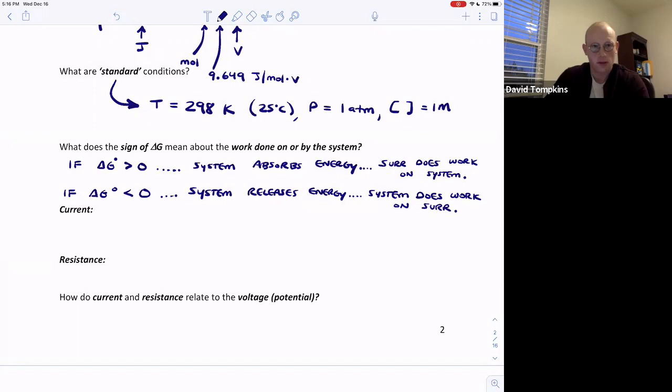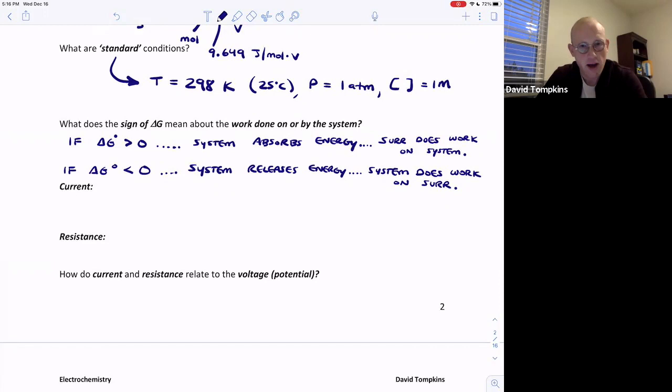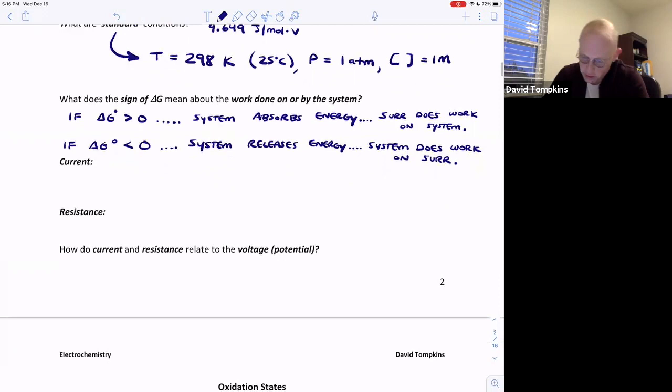A couple other parameters that we should be able to define and use mathematically are current and resistance and how they relate to voltage. Current, also known as I, is the charge that's transferred during an electrochemical reaction per unit time. In other words, current has units of coulombs per second. A coulomb per second is also known as an ampere, A.